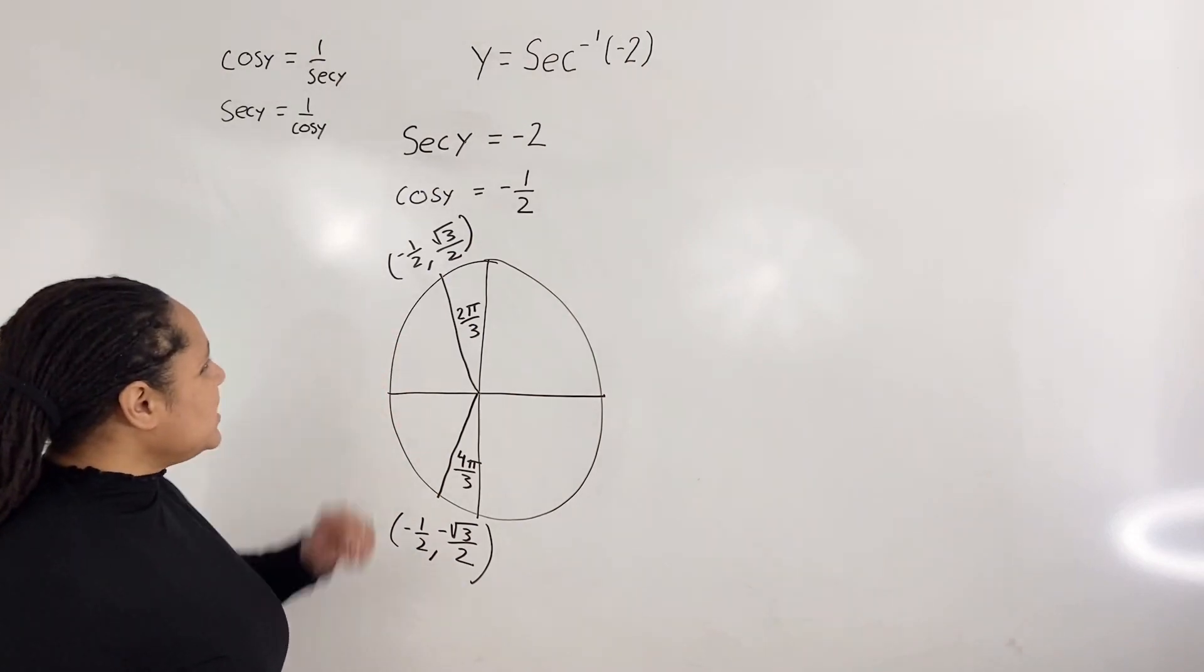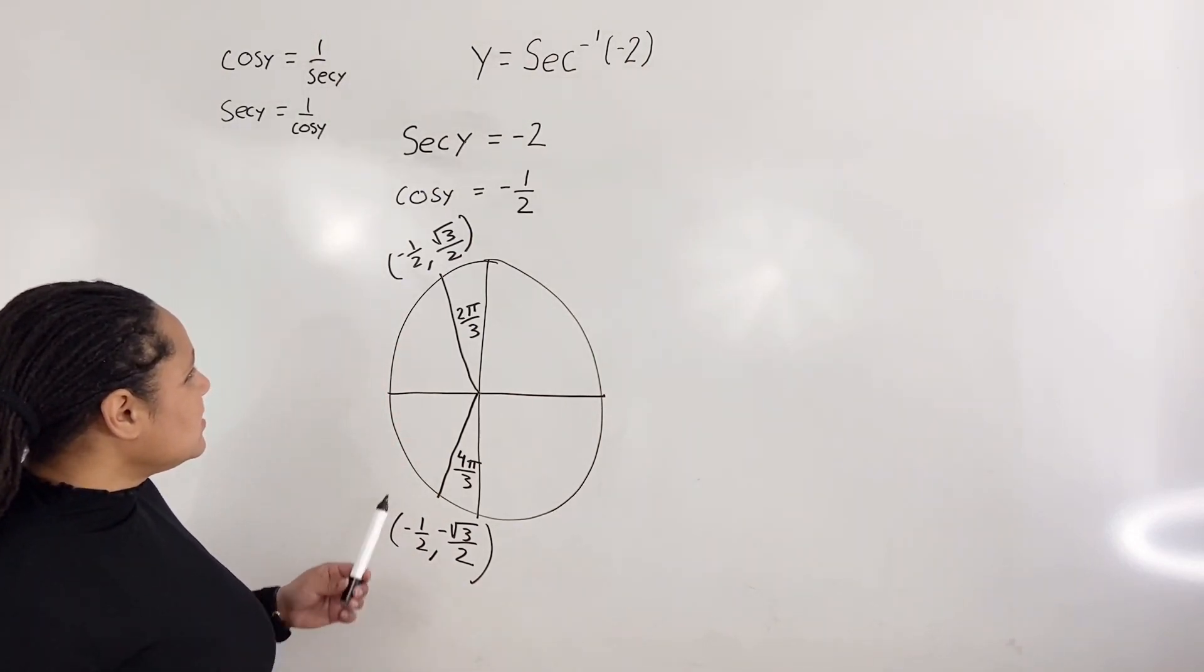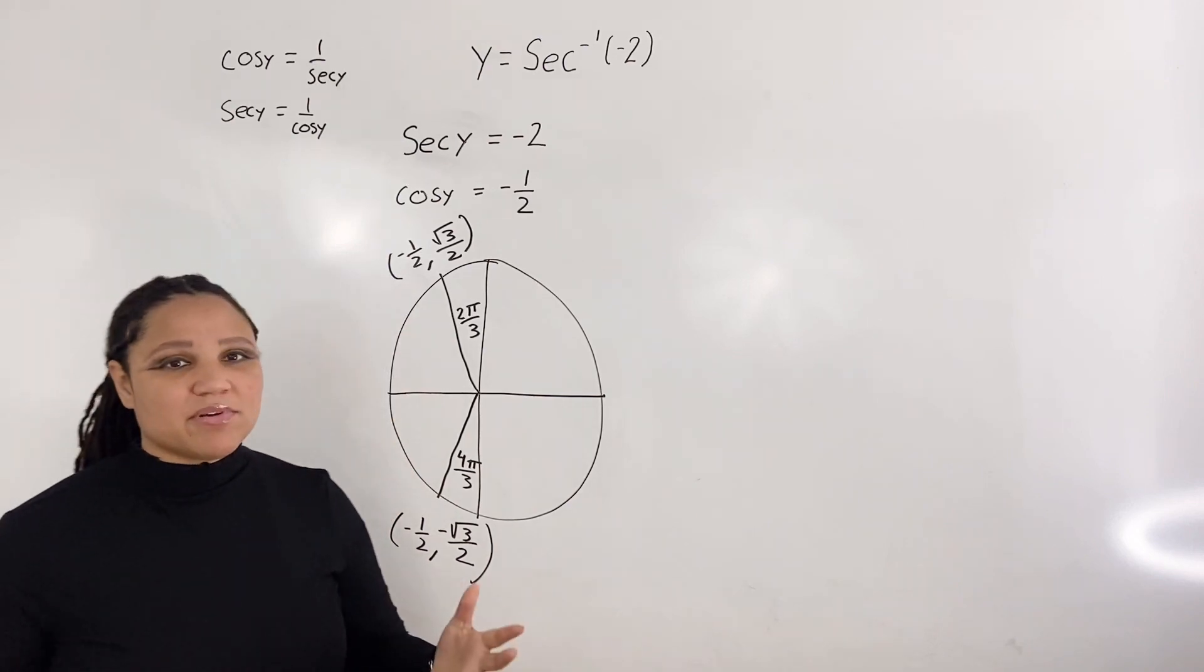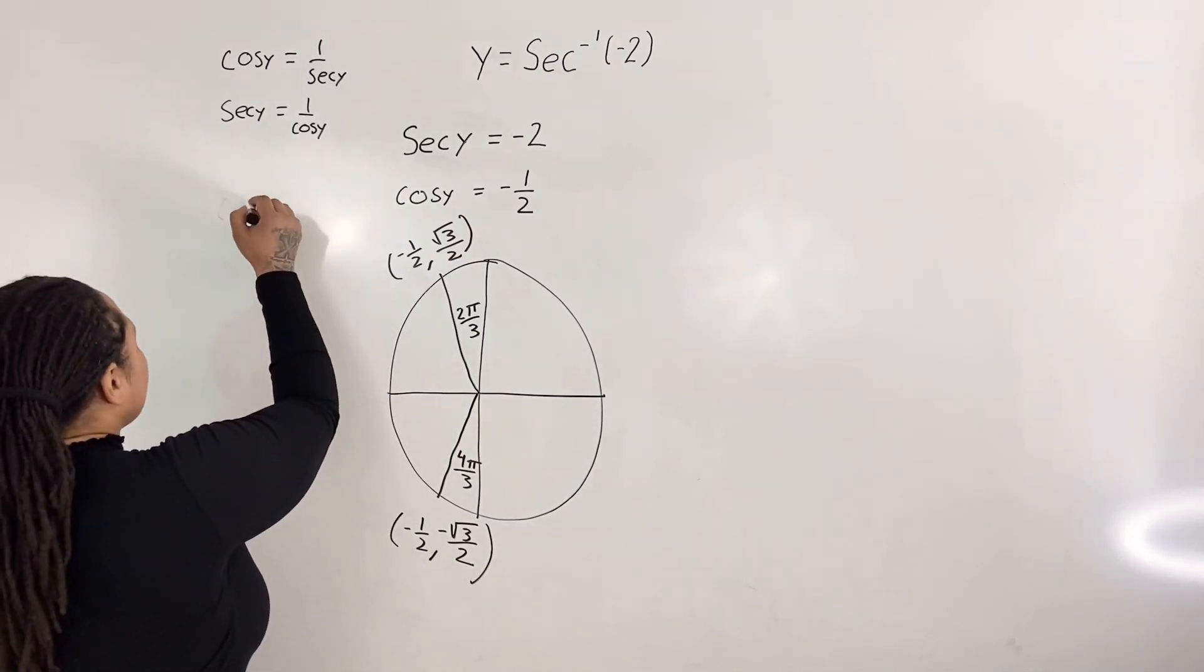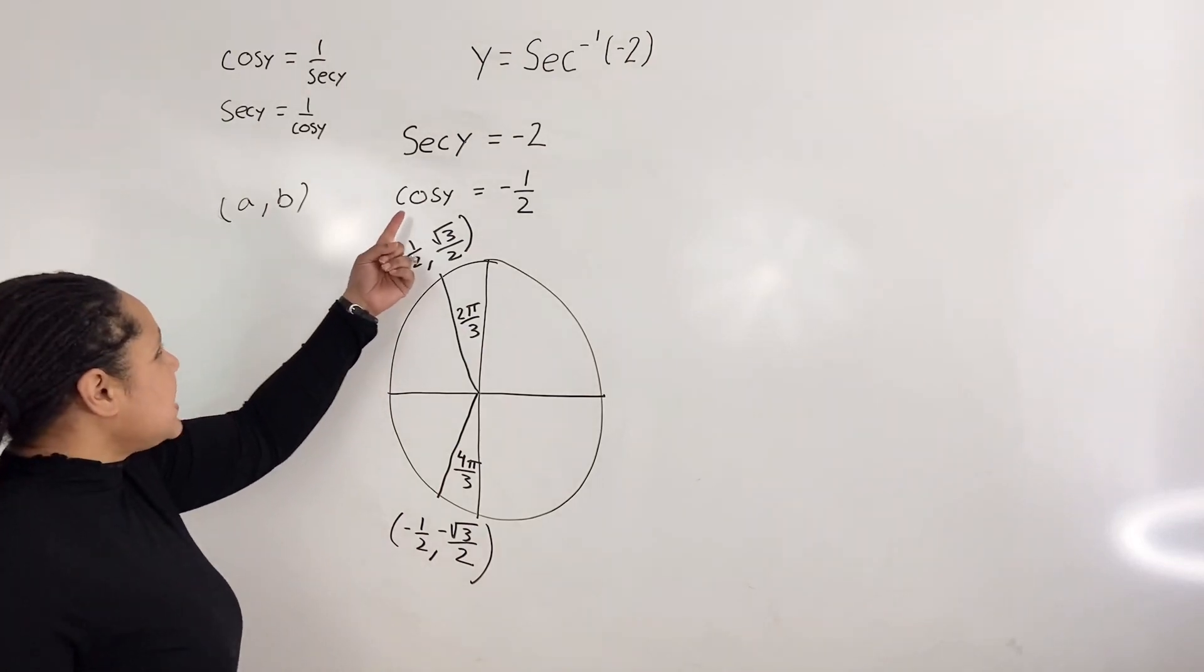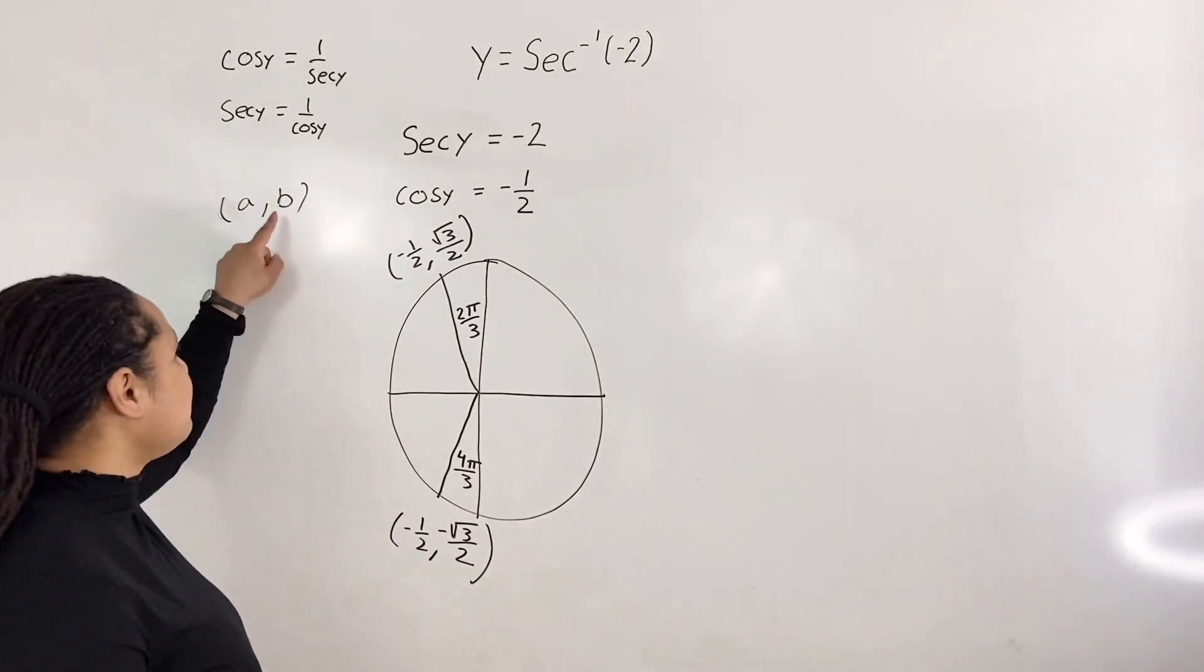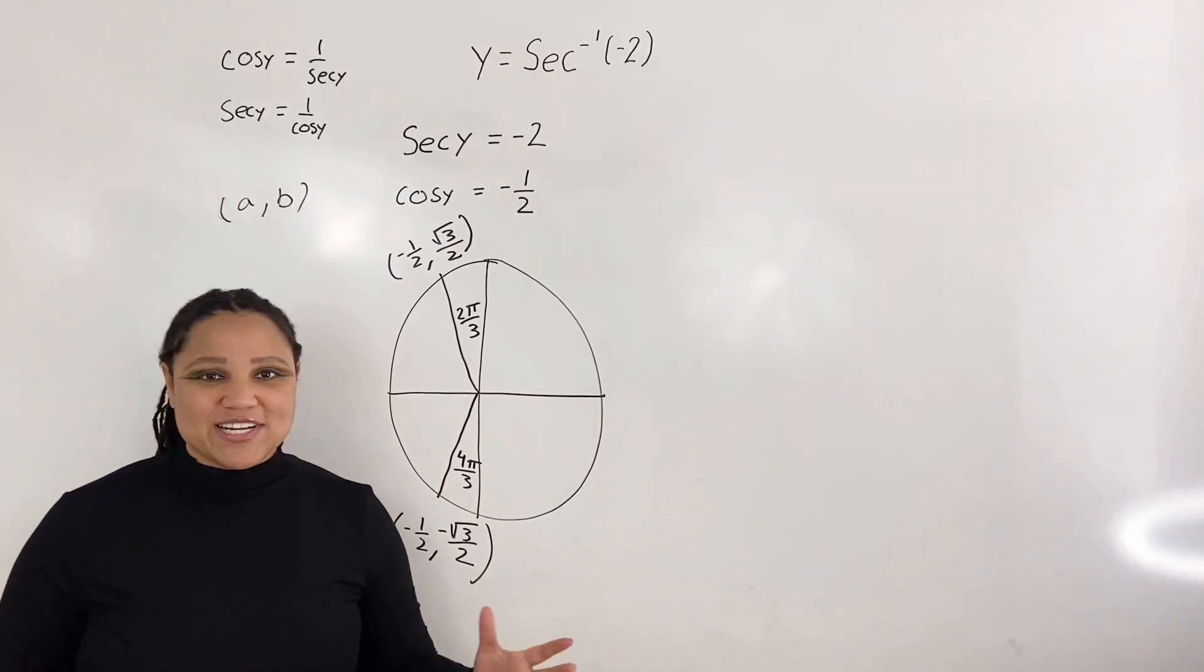Sure enough, we see that at these two angles, we get cosine of y equals negative 1 half. Remember that coordinates are in the form A comma B. Cosine takes on the A coordinate, whereas sine takes on the B coordinate. And sure enough, we see that negative 1 half is in our A coordinate.